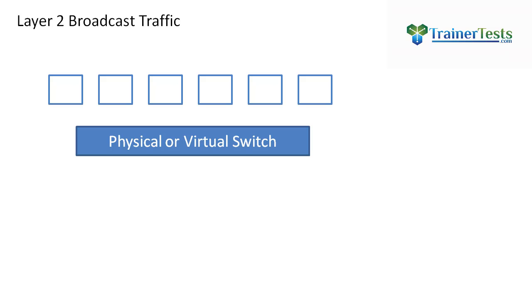Now there can be a variety of different reasons that a virtual machine or physical machine generates a Layer 2 Broadcast. The most common reason is an ARP request, and I'm going to do a video on that as well. But let's just focus on what actually happens when a Layer 2 Broadcast is generated.